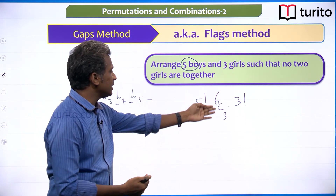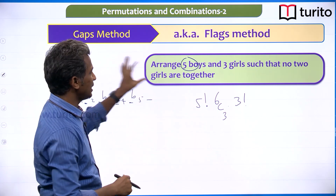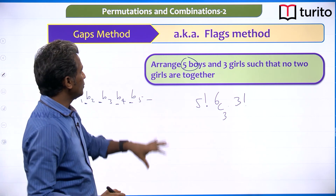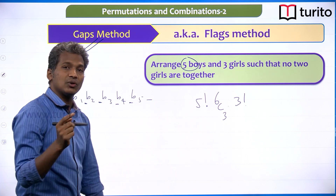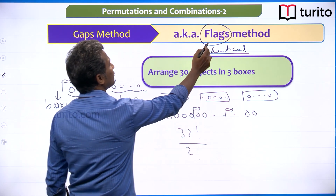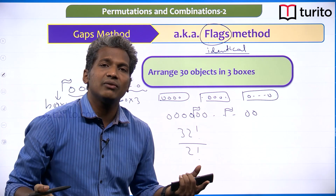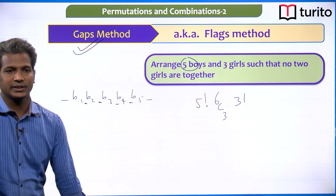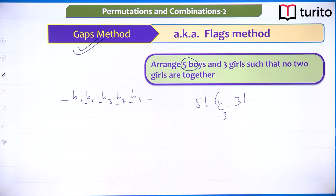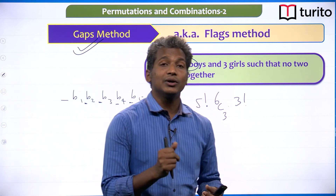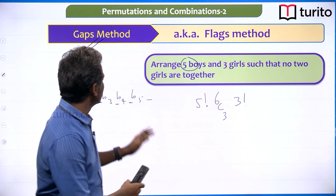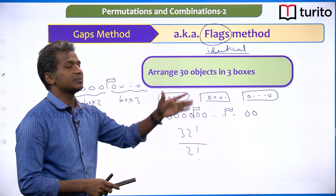You can also treat selecting 3 gaps as placing 3 flags — it is the same concept. The main stress in the gaps approach is on the gaps; in the flags approach, it is on the flags. But both work on the idea of breaking the arrangement. So the answer is 5! × 6C3 × 3!.